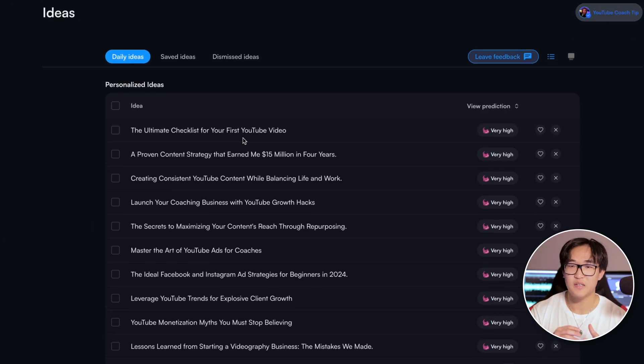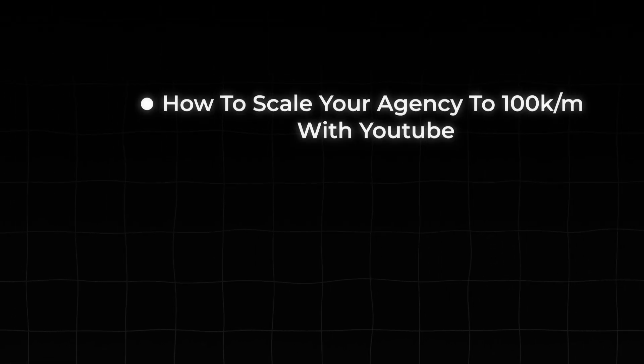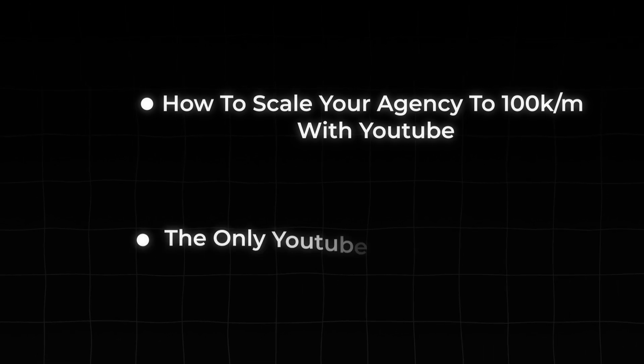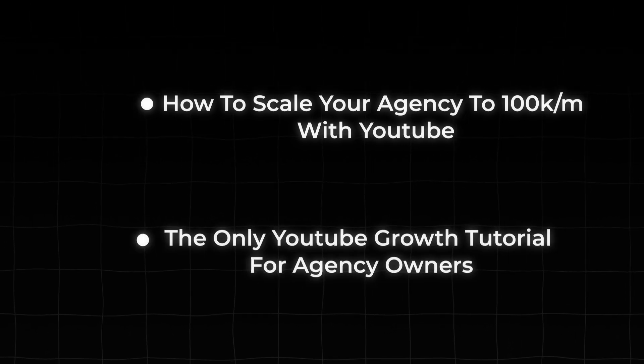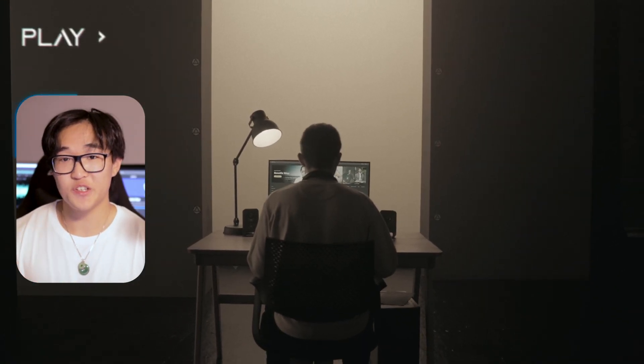By using the keyword tool offered in VidIQ, you can find keywords that you can base a video idea around. For example, we can definitely do a video about 'how to scale your agency to 100K a month with YouTube,' or another video about 'the only YouTube growth tutorial for agency owners,' as mentioned in the suggested matching keywords. What I'm trying to get at is that you can center your entire YouTube video idea around a very specific keyword, taking full advantage of this data to make killer YouTube video ideas meant for that specific niche.